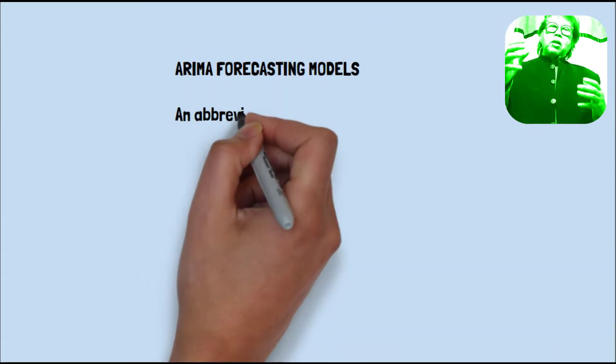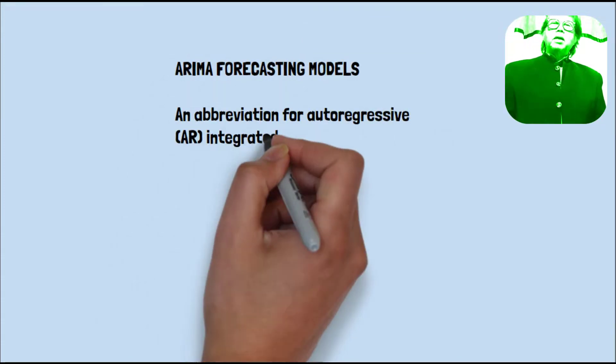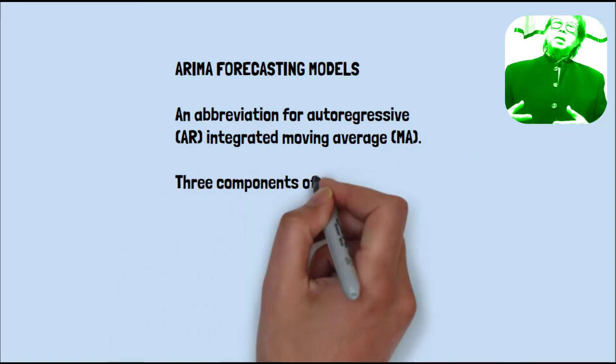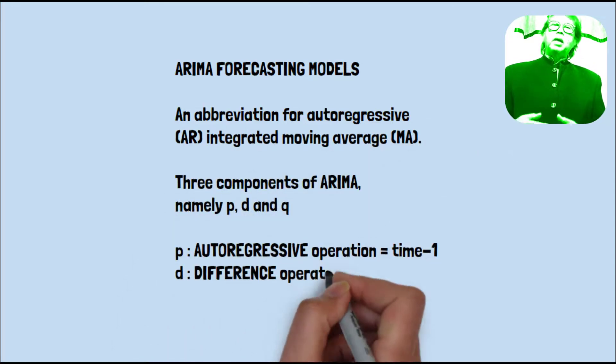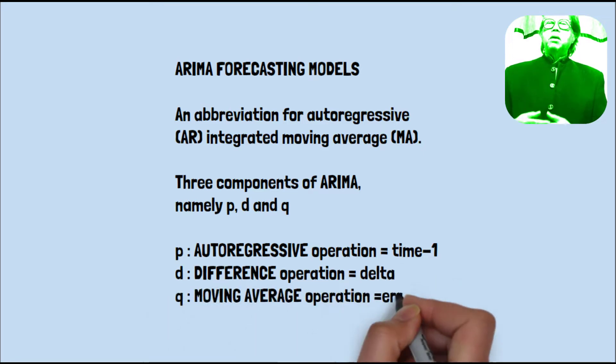Hello guys! The second topic is about ARIMA forecasting model. ARIMA is an abbreviation for autoregressive integrated moving average or MA.